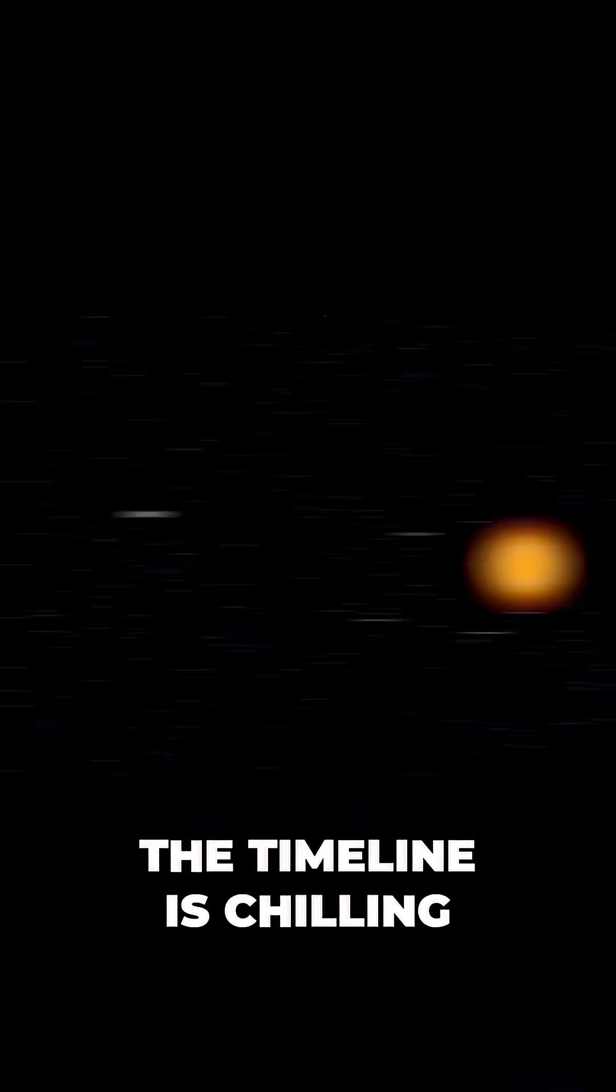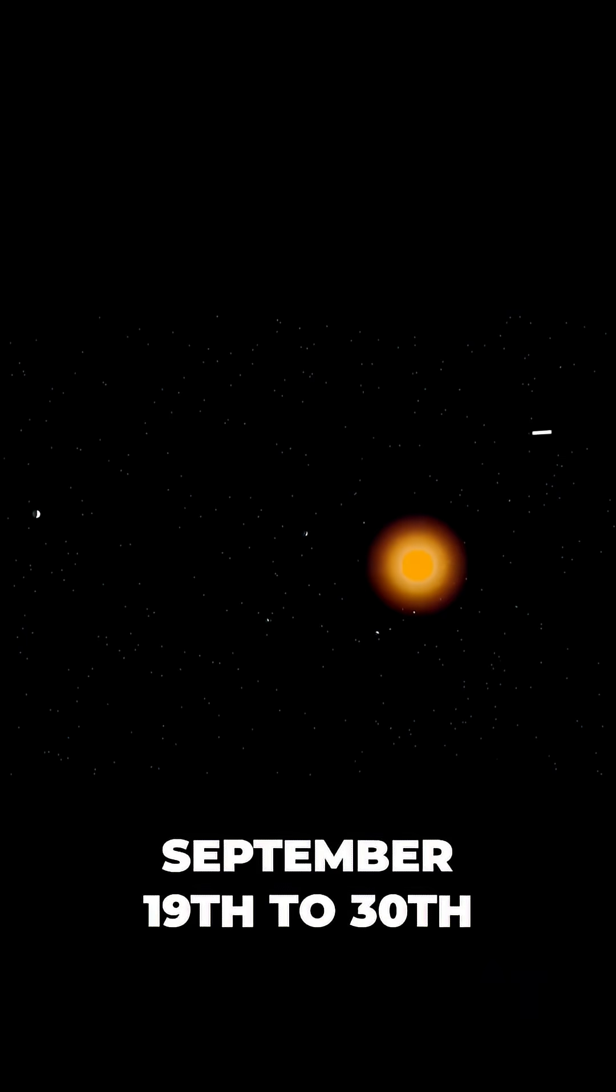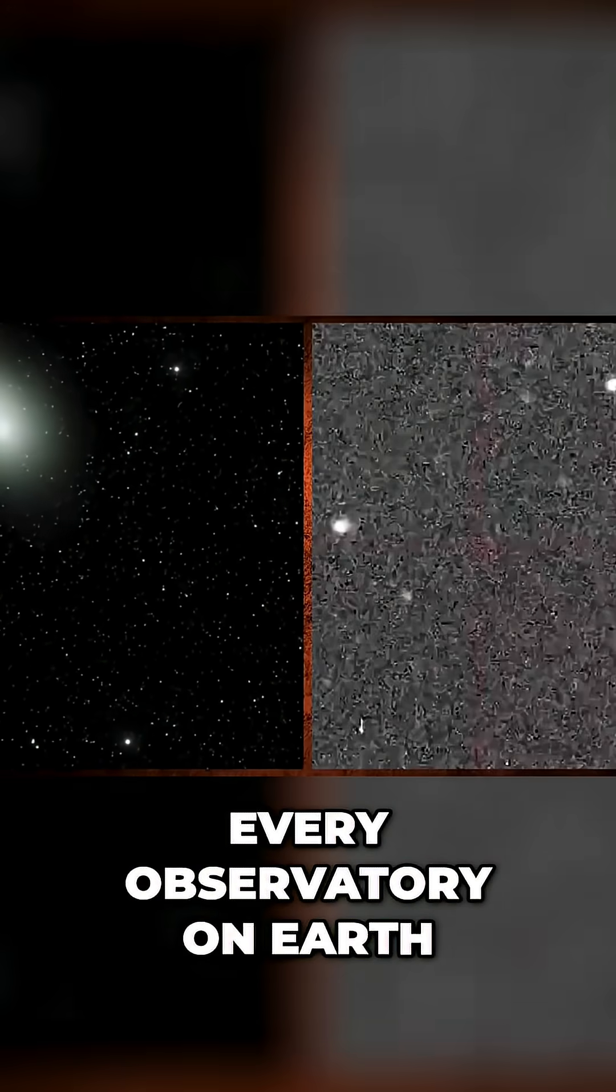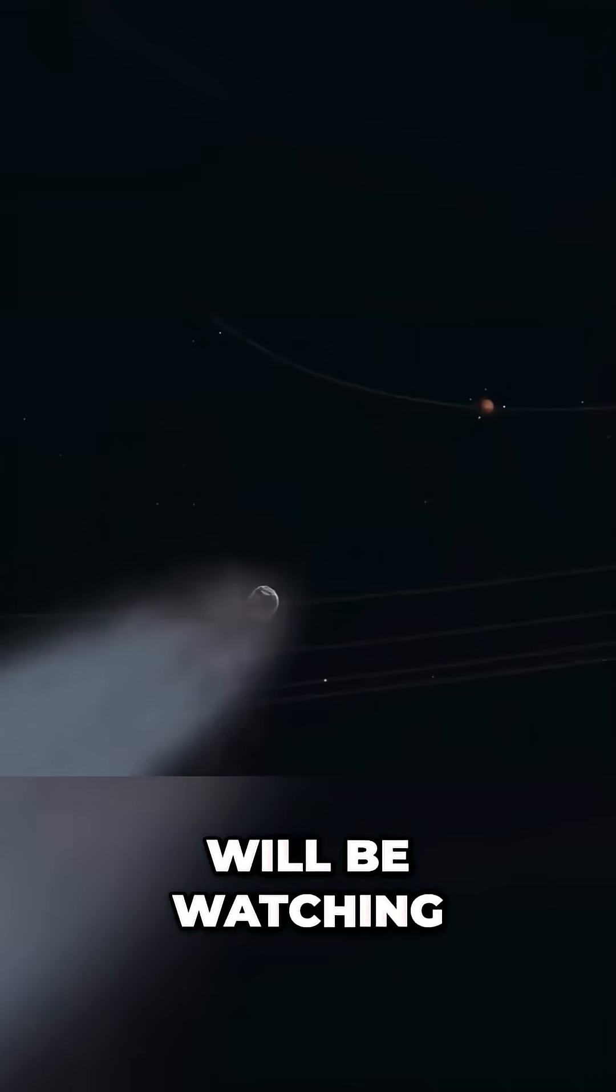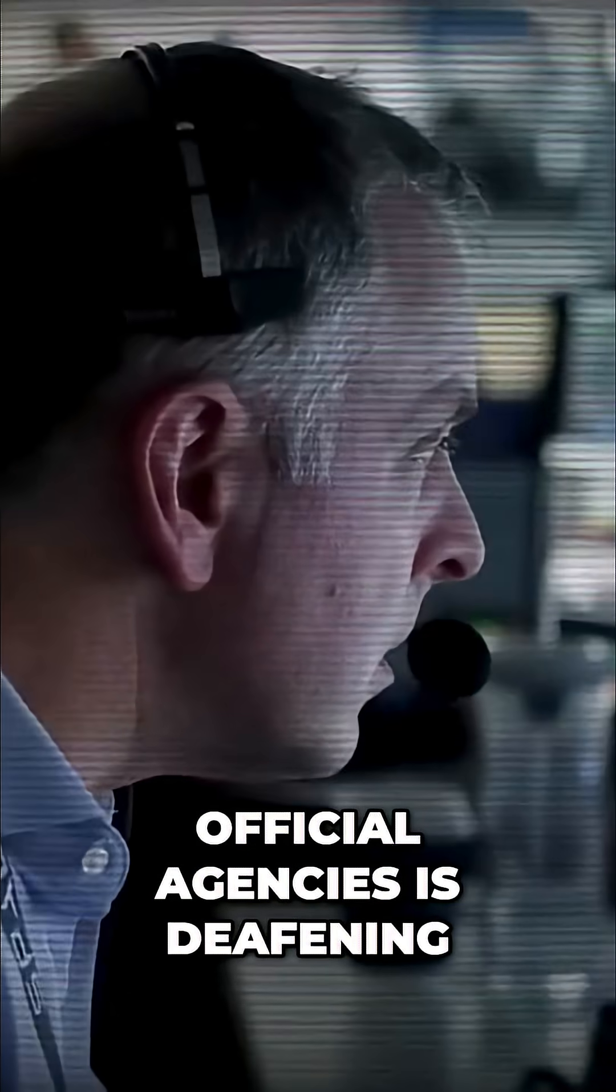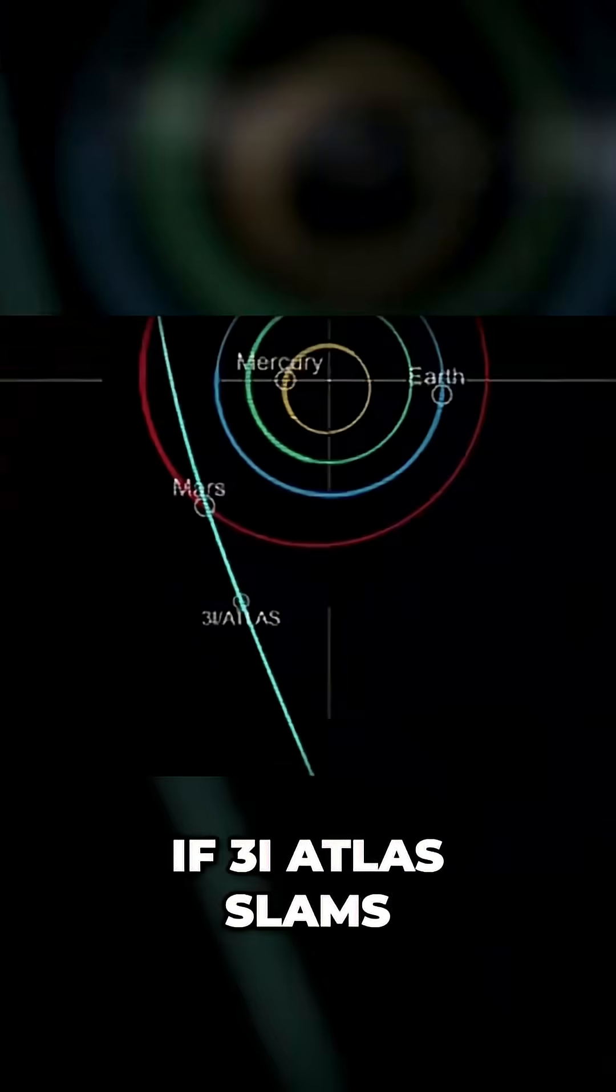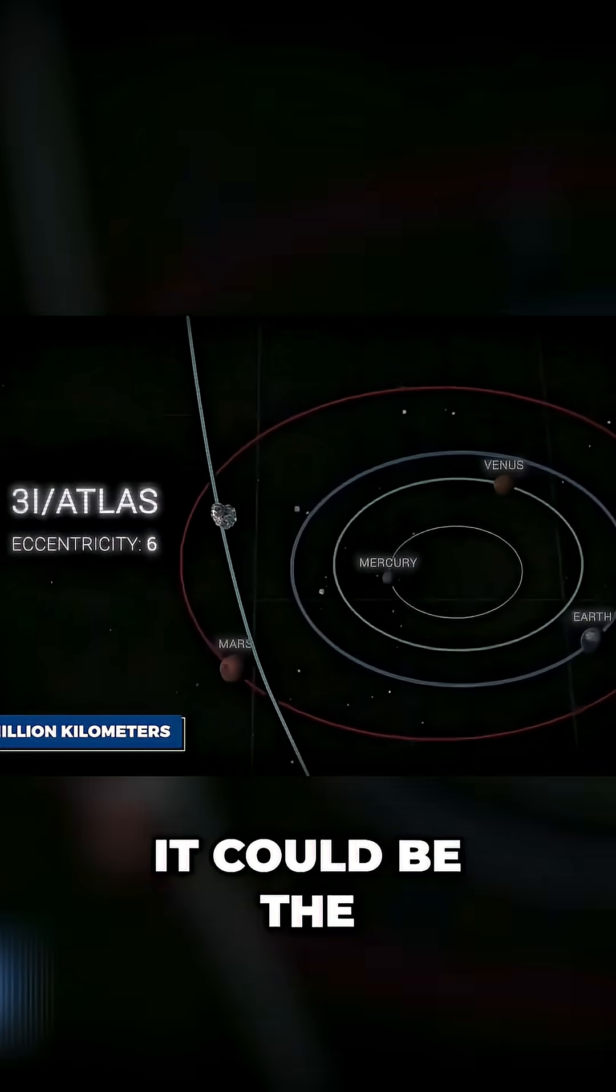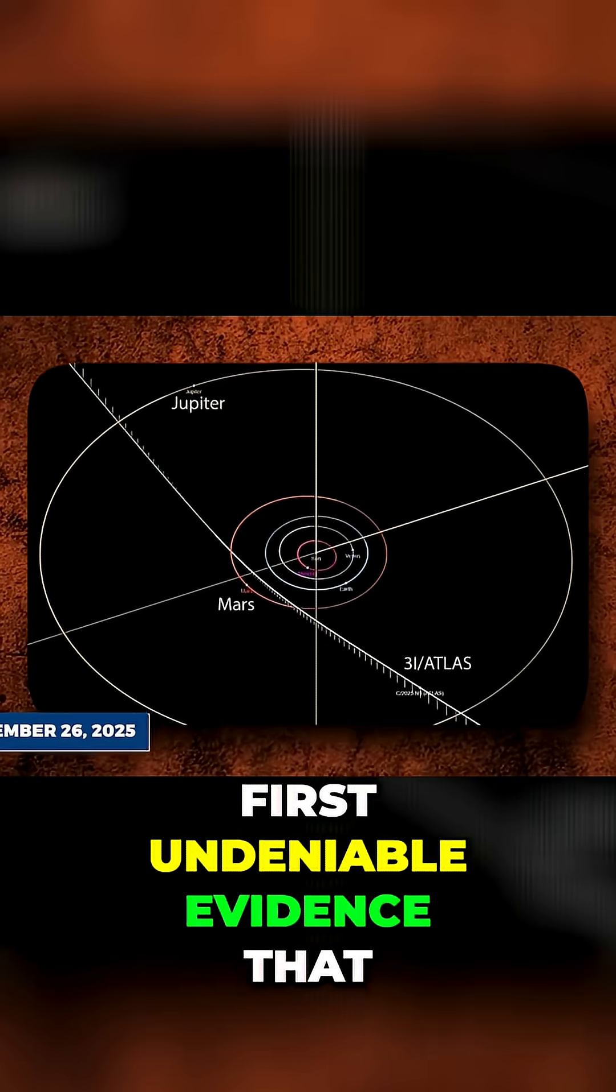The timeline is chilling. September 19-30, 2025 is the window for final course corrections. Every observatory on Earth will be watching, but the silence from official agencies is deafening. If 3I Atlas slams into Mars, it could be the first undeniable evidence that we are not alone in the universe.